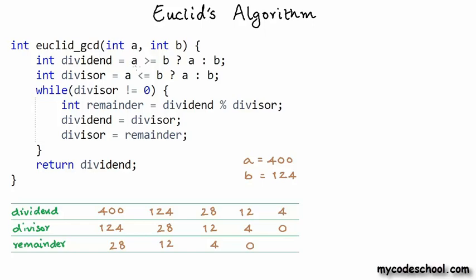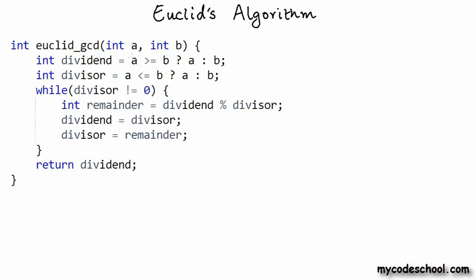Now let's compute the time complexity of Euclid's algorithm. Time complexity is always expressed as a function of the input, so it must be a function of A and B. Looking at the code, there are three kinds of operations: assignment, comparison, and modulo/division. For infinitely large numbers, these operations take time proportional to the number of digits. However, since we are using the int data type — which on a modern machine compiles to 32-bit numbers — there are microprocessor instructions handling comparison, assignment, and division in constant time.